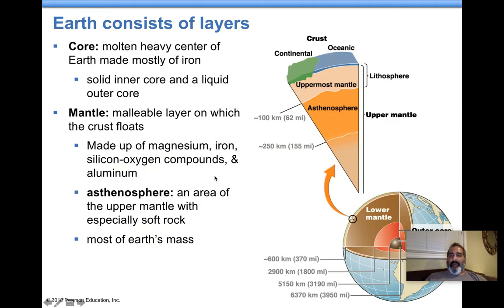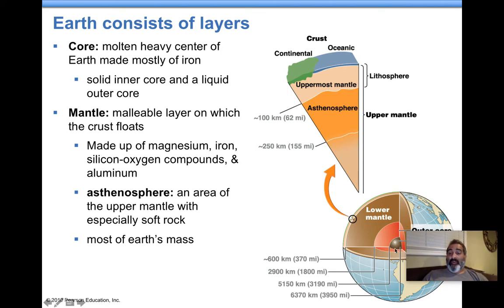Let's talk about the Earth as a whole. The center of our Earth is called the core. We have an inner and an outer core. The inner core is solid because of how much pressure, how much weight is on top of it — it's basically smashing it together. The center of the Earth is solid, mainly iron, and magnetic.